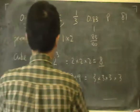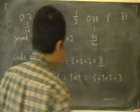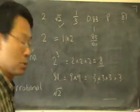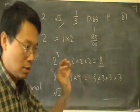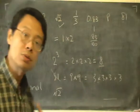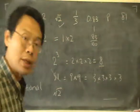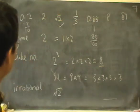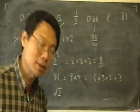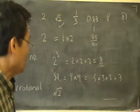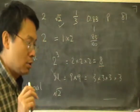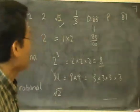Actually it is true that square root of 2 cannot be written as a whole number divided by a whole number. Unfortunately it's a bit tricky to explain why and I might leave that to another section.